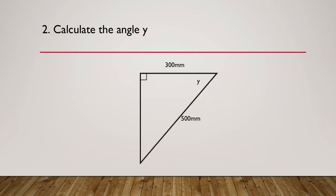Question two: Calculate the angle y. So have a think about how you might go about calculating the angle y around a right angle triangle with the adjacent at 300 millimeters and the hypotenuse at 500 millimeters.